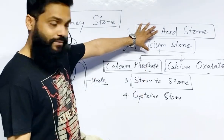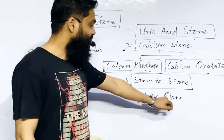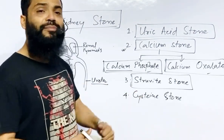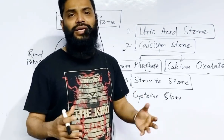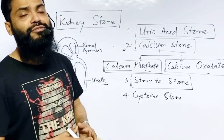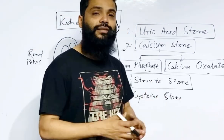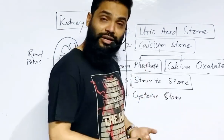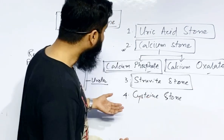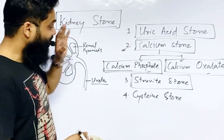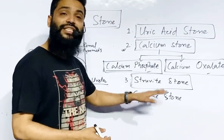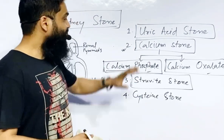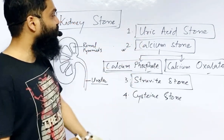The last one is called cystine stone. Cystine is a kind of amino acid. Whenever we have a high amount of cystine-rich food or amino acid-rich food where cystine is more available, we can also have this kind of stone. This stone is also not that common, just like struvite stone.